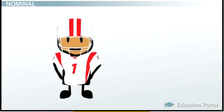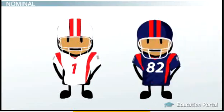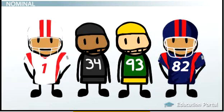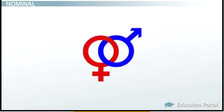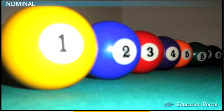Think about the numbers on the jerseys of football players. Is the player wearing number 1 a better player than the player wearing number 82? Maybe, but that doesn't have anything to do with the numbers they wear. Jersey numbers have no value as far as telling us anything about the ability of the players. It's just a way to identify them. Other examples of variables measured on a nominal scale include gender, race, and the number on pool balls.